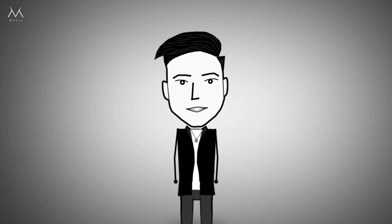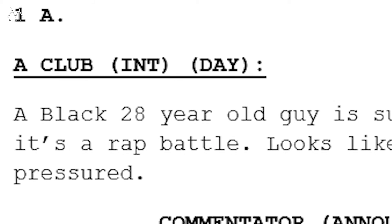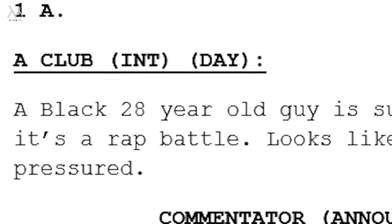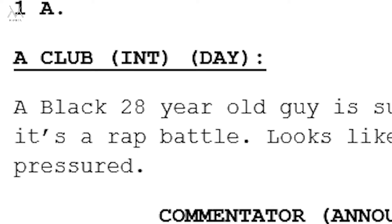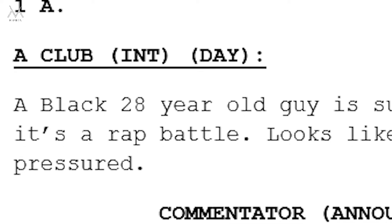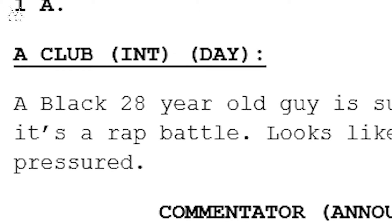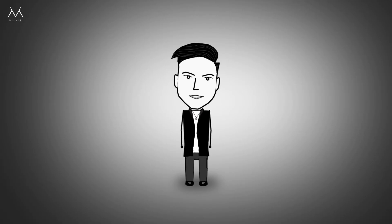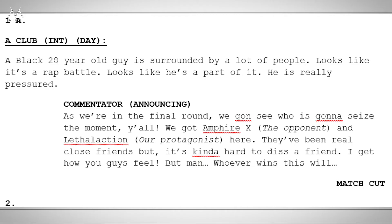Usually you write the scene heading in capital letters. You can use the room with a short description — for example, 'a small room.' In brackets, you can write the interior or exterior. Also, in the same bracket, you write the time of day: day, night, or evening.